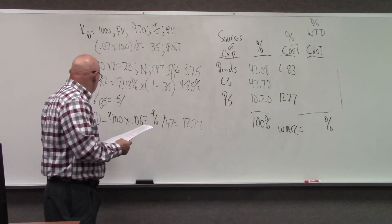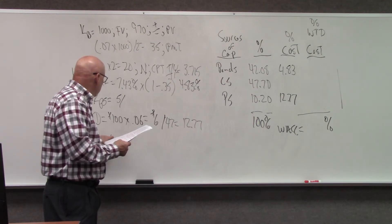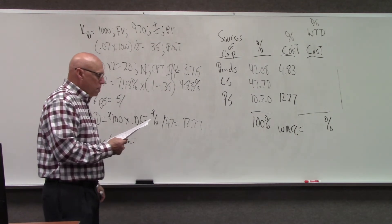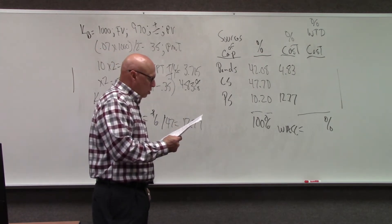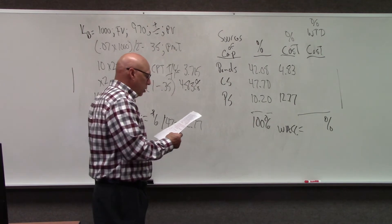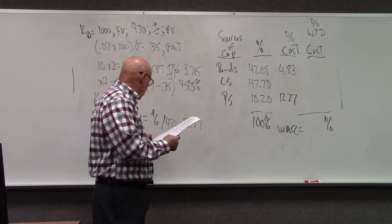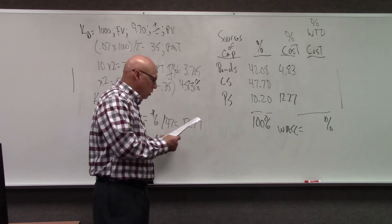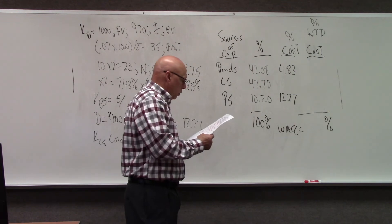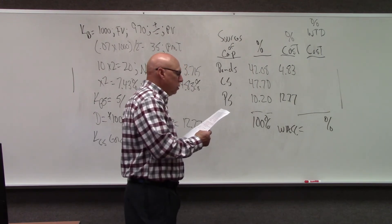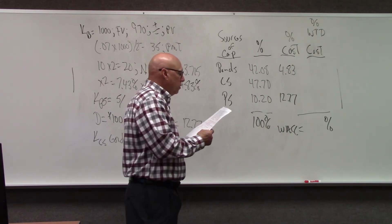Let's find the cost of common stock using Gordon. Gordon is D1 over P1 plus G. So D0 times 1 plus G. D0 is $1.26. Make sure we got that right—yeah, $1.26. And the growth rate of dividends is 9%, times 1.09.